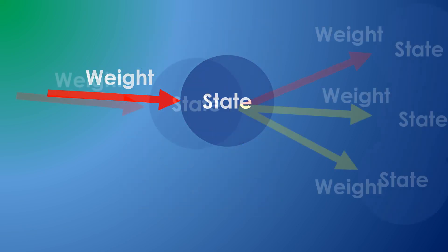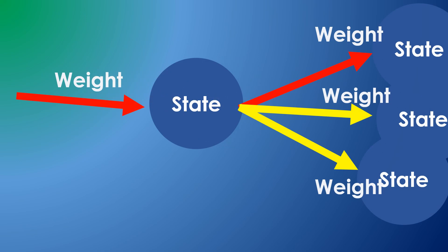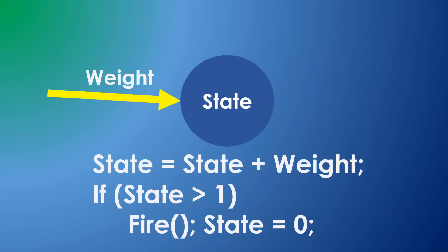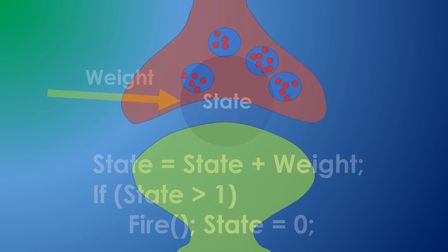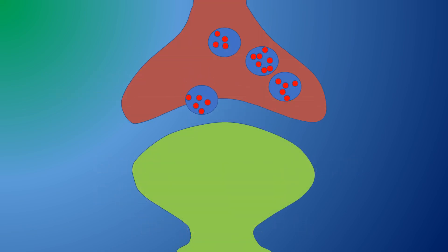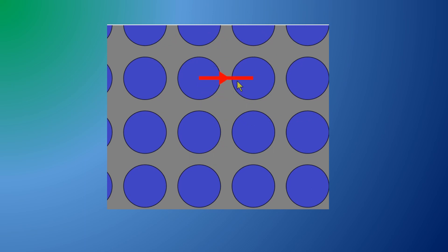When a neuron fires, it processes all its outgoing synapses and adds each synapse weight to the value of each target neuron. If those neurons' values exceed the threshold level of 1, they will fire themselves. This algorithm represents a simple, plausible implementation of biological neurons. The firing rate of biological neurons is several hundred times per second, but in the Brain Simulator, you can slow down the speed so you can see individual neurons fire.